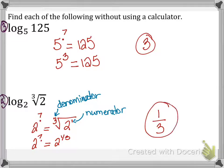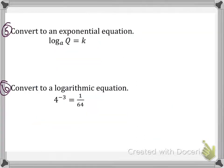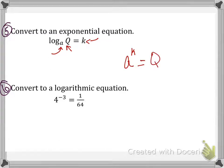Number 5 says convert to an exponential equation. Remember, the base stays the same: log base a of q = k is the same as a^k = q. So 'a' is the base, 'k' is the exponent, and 'q' is the answer.